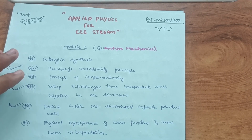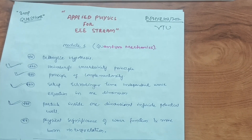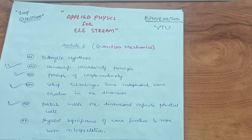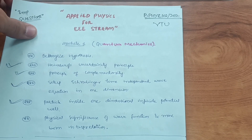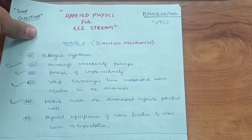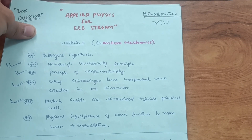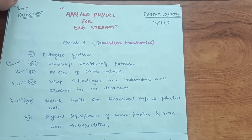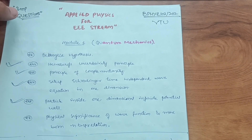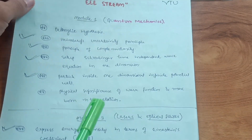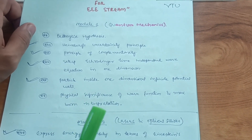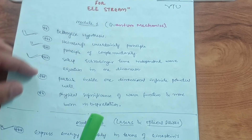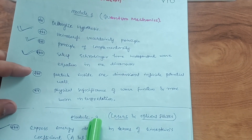With these six topics covered in Module 1, you can easily get 10 to 15 marks. If you're comfortable with numericals, go through those too. This is one subject where you can pass with theory alone, though VTU sometimes gives more numerical questions than theory. There are about three derivation parts which can get you through — so this wraps up Module 1.